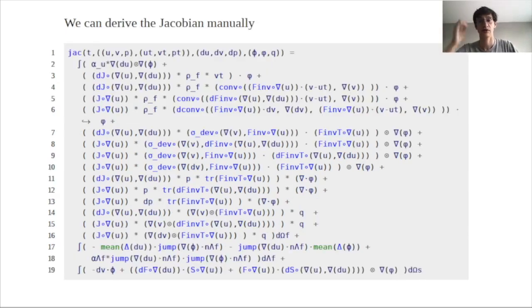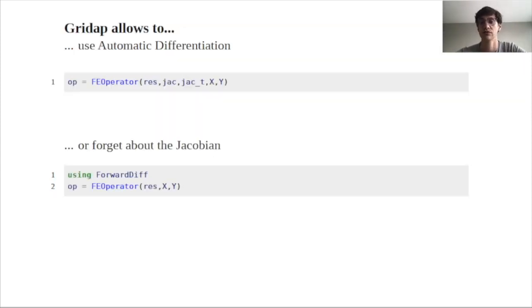So, this can be obtained manually by deriving the Jacobian, but it's time-consuming and it's prone to introduce errors. And GridApp offers the option to use this ForwardDiff package in which we can forget about the Jacobian and just define the finite element operator based on the residual and the finite element spaces.